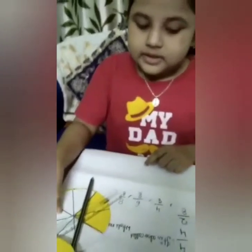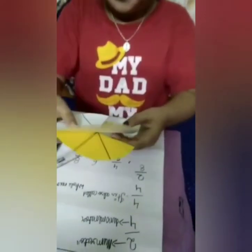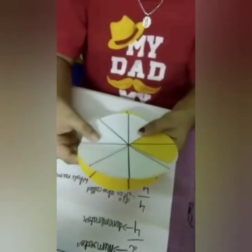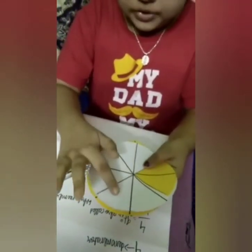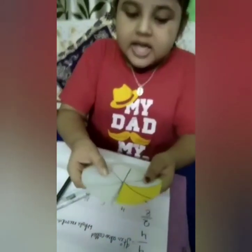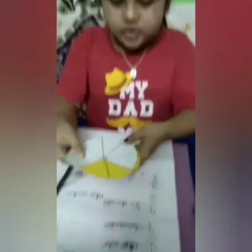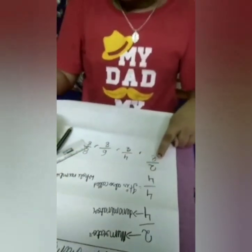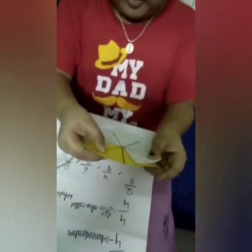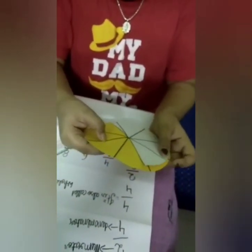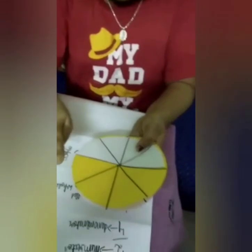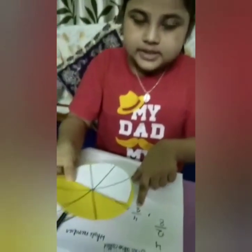Now I will take the example 2 by 8. Here there are 8 parts in total: 1, 2, 3, 4, 5, 6, 7 and 8. In the 8 parts, 2 parts are colored. So the answer will be 2 by 8. Now 4 by 8 — in 8 parts, 4 parts are colored. So the answer will be 4 by 8.